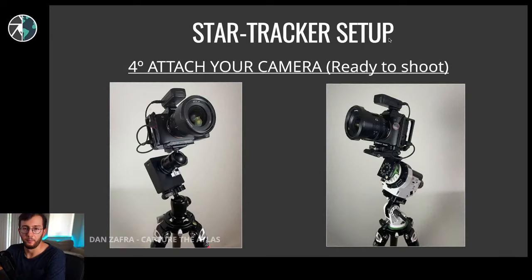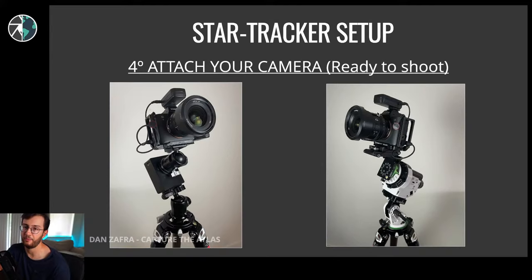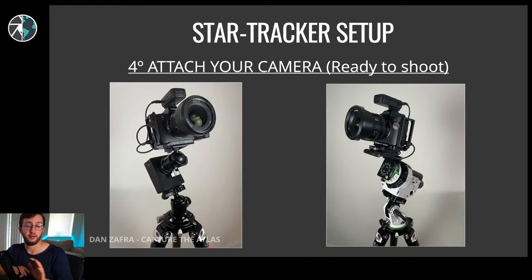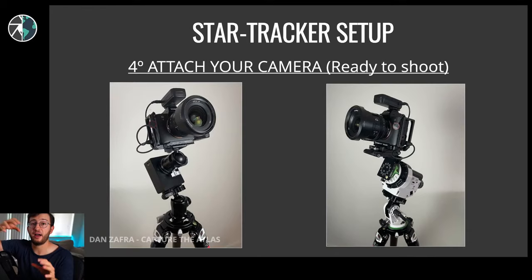Once ready, attach your camera and prepare to shoot. On the left you can see the Motion Move setup with ball head, tracker, ball head, and camera. On the right is the SkyWatcher with Z bracket and camera. Notice the intervalometer is already attached to the camera - this is for one reason: when you put your camera on the tracker, it should be fully equipped with everything you need. If you need an intervalometer, a lens heater, a power bank - attach everything before doing the polar alignment, because otherwise it's very easy to throw off the polar alignment.